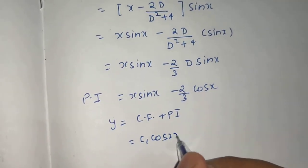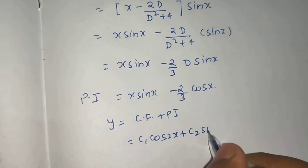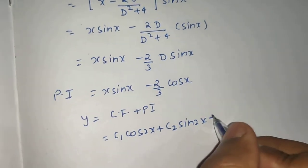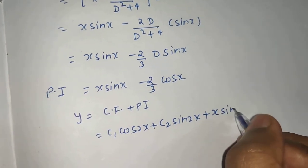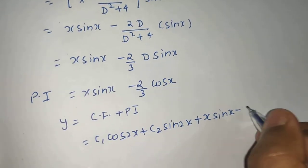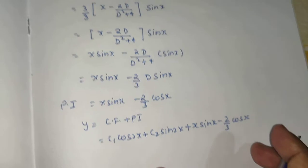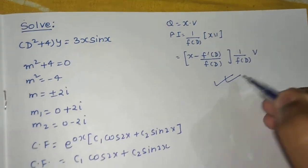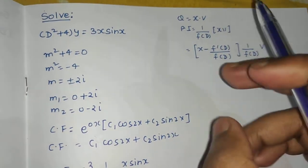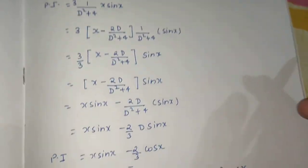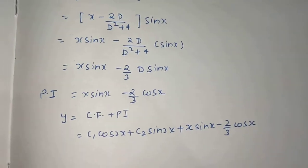Final solution is CF + PI. Your CF was C₁cos(2x) + C₂sin(2x) plus your PI, which is x·sin(x) - (2/3)cos(x). So again, easy one if you can remember this rule and the basic rules which we discussed in the lecture.